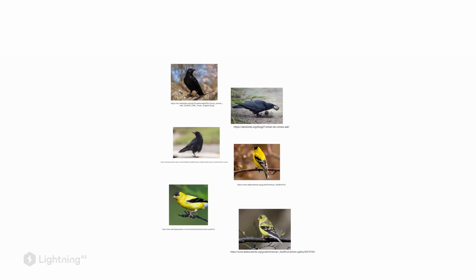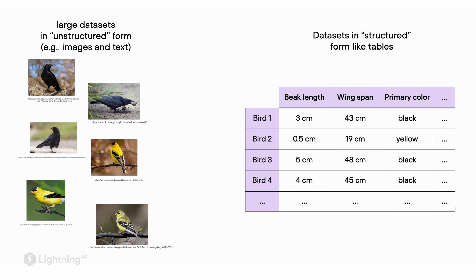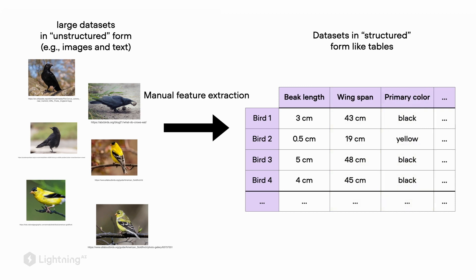Here's an example we saw in the last video: we have six pictures of birds, and we can think of this as an unstructured dataset. In contrast, there's something called structured data that essentially looks like a dataset table, where each row represents one of the birds and the columns have different measurements. Someone took measurements of these birds to come up with these features, and often this requires domain knowledge — knowing what is important in a dataset.